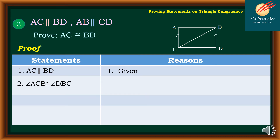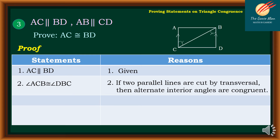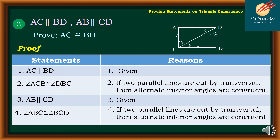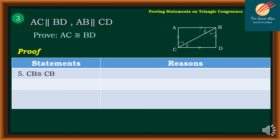Statement two: angle ACB is congruent to angle DBC — reason: if two parallel lines are cut by a transversal, then alternate interior angles are congruent. Statement three: AB is parallel to CD — reason: given. Statement four: angle ABC is congruent to angle BCD — reason: if two parallel lines are cut by a transversal, then alternate interior angles are congruent. Statement five: CB is congruent to CB — reason: reflexive property.